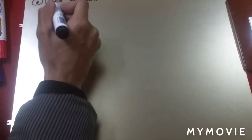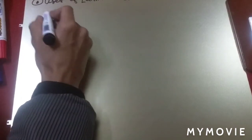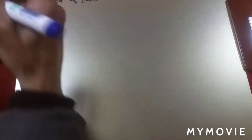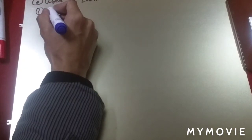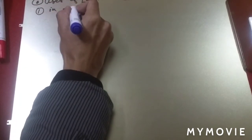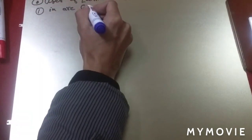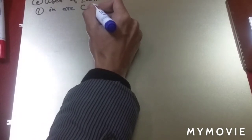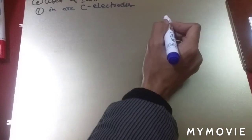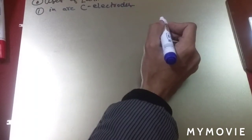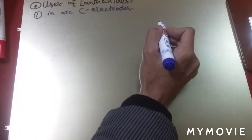Lanthanide compounds are filled into arc carbon lamps. These arc carbon electrodes are used to give more brilliant light.